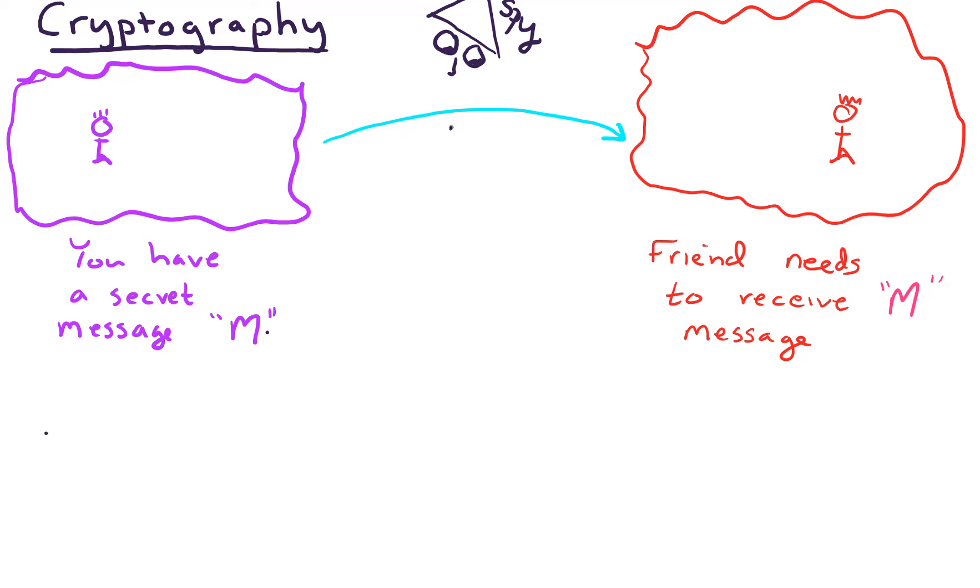And so what you don't want to do is just send your message across where the spy would be able to interpret it. So what you want to do is encode the message. You want to send what we call a coded message.